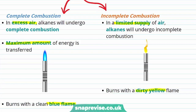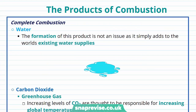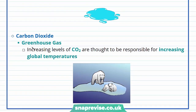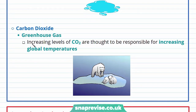These two different reactions produce slightly different products. Let's look at the products of complete combustion. The first product is water — the formation of water is really not an issue because it just adds to the world's existing water supplies. The other product is carbon dioxide. Producing carbon dioxide is not ideal, as carbon dioxide is a greenhouse gas. Increasing levels of carbon dioxide are thought to be responsible for increasing global temperatures, which have allowed for consequences such as the melting of the polar ice caps and the rising of sea water levels.